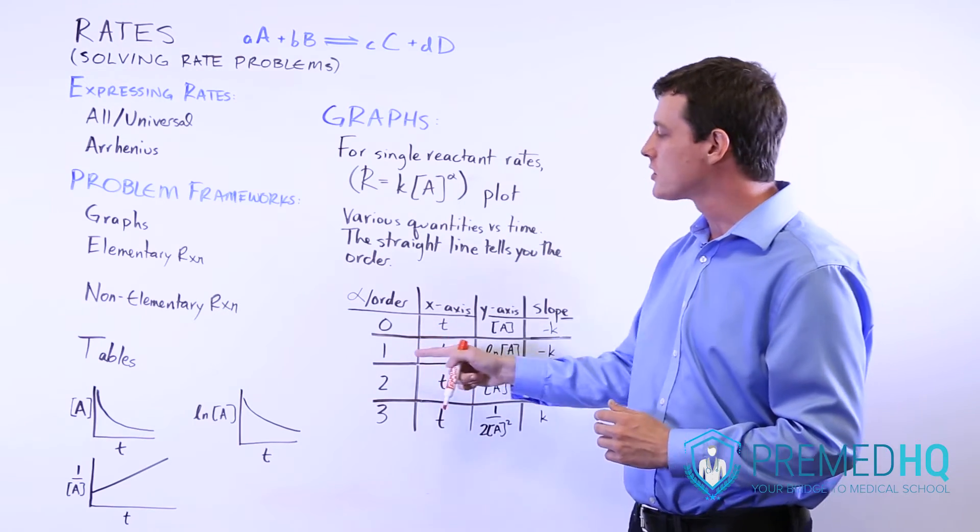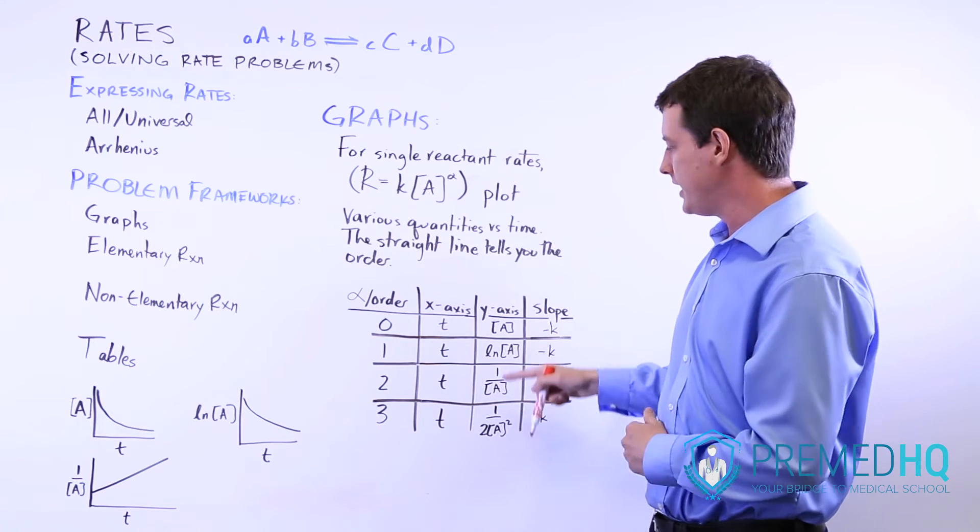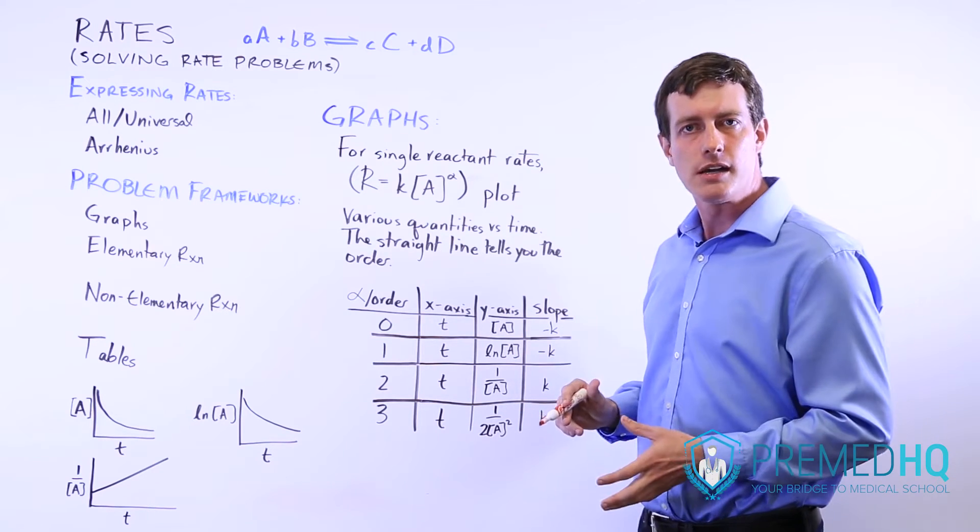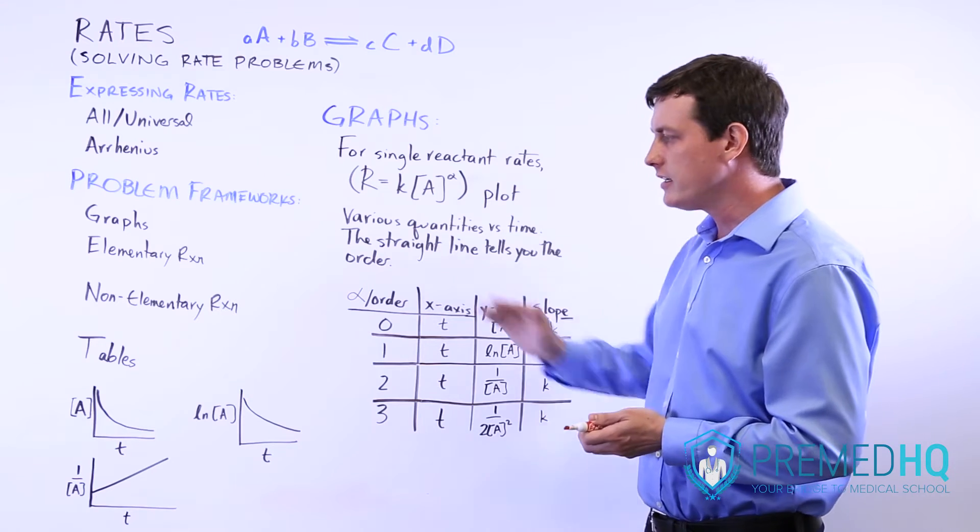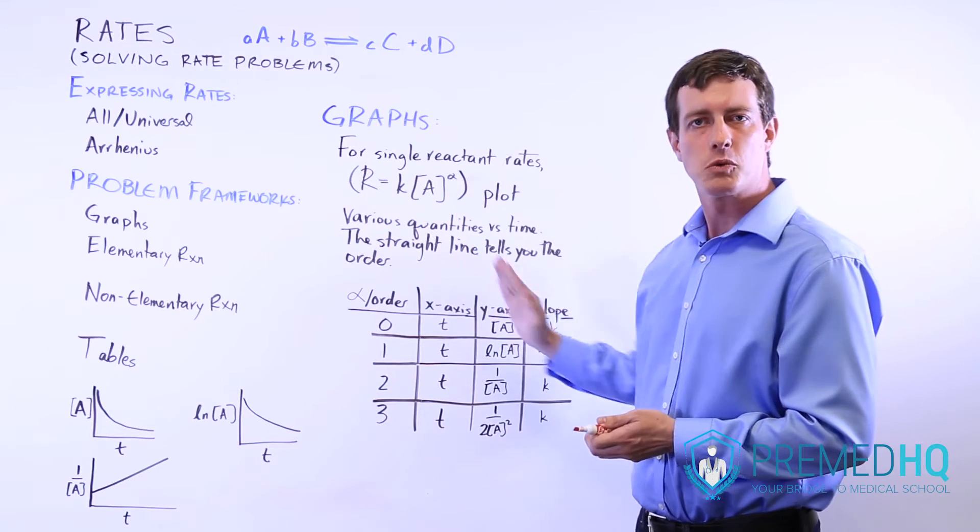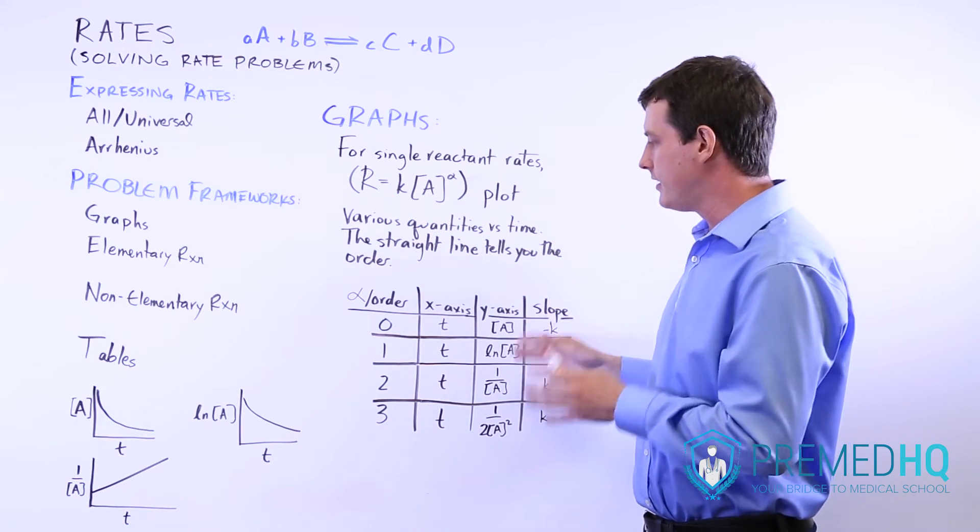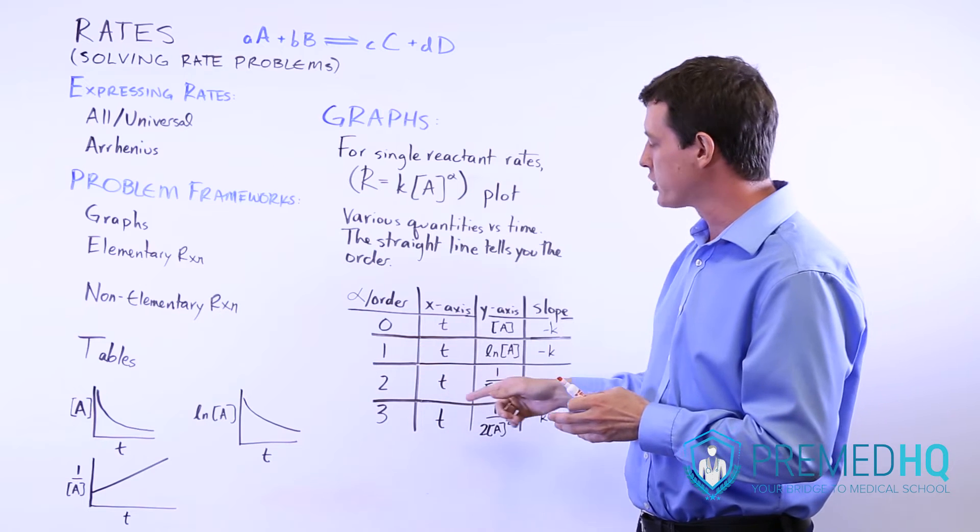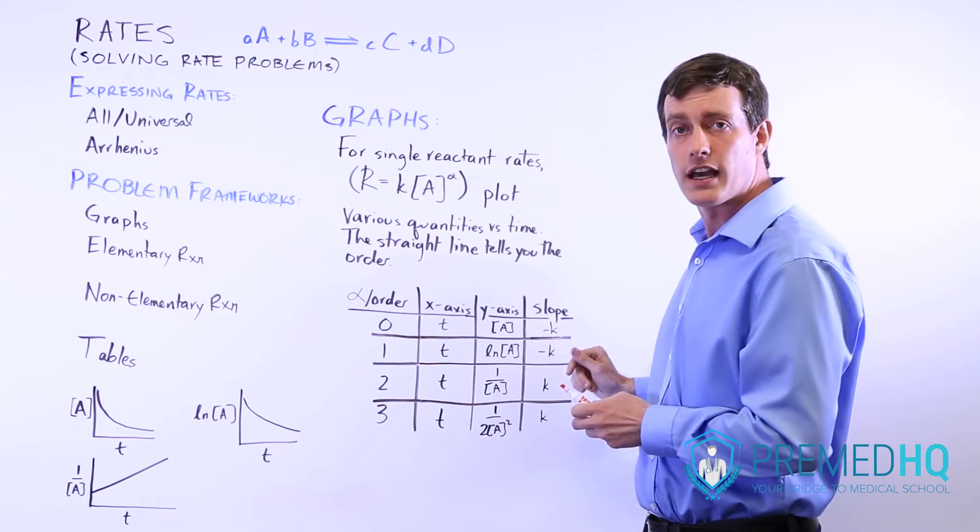For a first order reaction, what you do is you plot the ln of A versus time. And if that yields a straight line with a downward slope, then that means that it's a first order reaction, and the slope will be expressed as negative k.